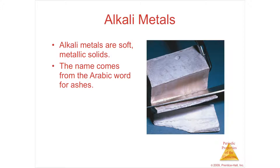They're all very soft — maybe the consistency of hard cream cheese or frozen ice cream — something you could cut with a knife easily. Because they're in group one, they tend to form cations; they lose an electron, are easily oxidized, and have very low ionization energy, so they form ionic compounds with non-metals very easily.